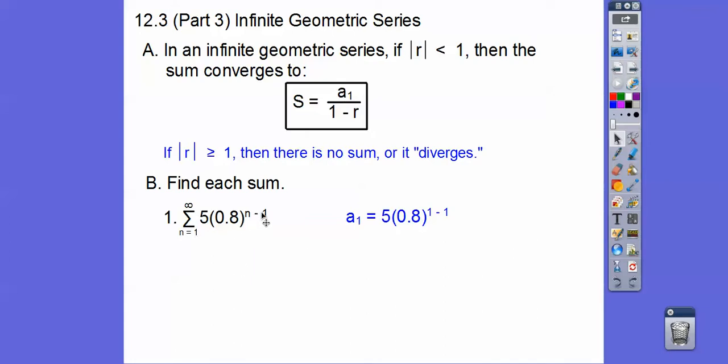So 1 minus 1 equals 0. So we get 0.8 to the 0 power, and anything to the 0 power equals 1. So 5 times 1 equals 5. So that's our first term right there.